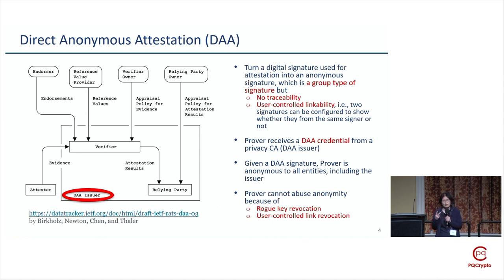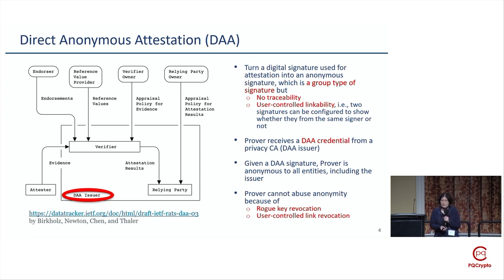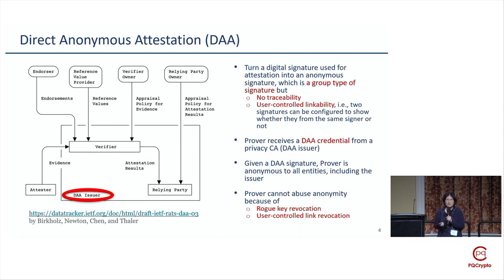We provide two types of revocation. One is called key revocation: if an attester's key is compromised — or possibly even sold on eBay — that key cannot be used to sign attestation evidence. The second is link-based revocation, where the verifier can build a local revocation list; if somebody doesn't behave well, the verifier can stop talking to them.